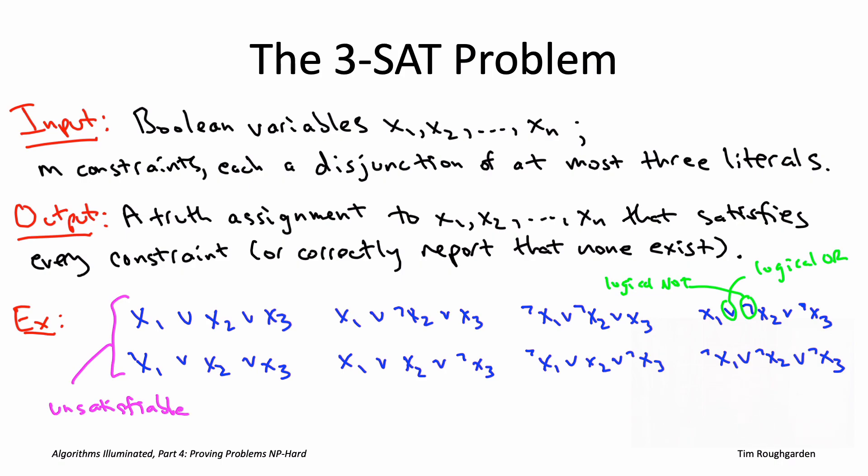Indeed, there's eight possible truth assignments for the three Boolean variables, and each of these eight constraints rules out exactly one of those eight possible truth assignments. So there's none left, so it's unsatisfiable. On the other hand, if we deleted any one of these eight constraints, we would have a satisfiable instance of 3SAT because there'd only be seven forbidden assignments to the three variables. There'd be one leftover that would be satisfied. So in general, when there exists a truth assignment satisfying all the constraints, we call it a satisfiable instance. Otherwise, we call it an unsatisfiable instance.